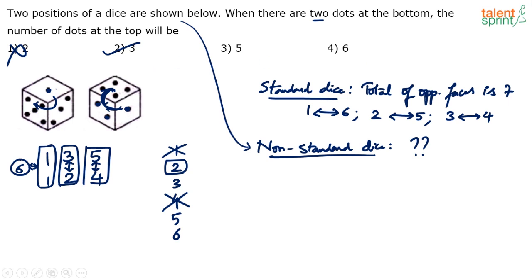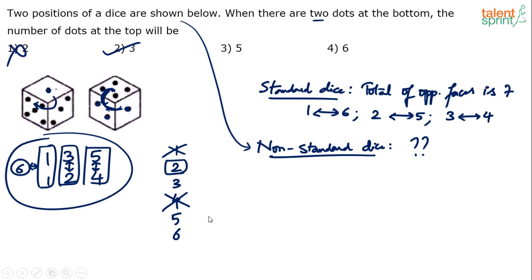So one approach is to eliminate answer options directly by looking at the figures. Otherwise, this clockwise technique takes very little time. When two is at the bottom, the number at the top will be three. Sometimes three figures are given — with more positions, elimination becomes even easier. Remember: the total of opposite faces need not be seven; that's only for standard dice. Option two — three dots — is the answer.